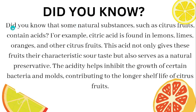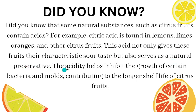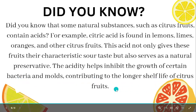Did you know that some natural substances such as citrus fruits contain acids? For example, citric acid is found in lemons, limes, oranges and other citrus fruits. This acid not only gives these fruits their characteristic sour taste but also serves as a natural preservative. The acidity helps inhibit the growth of certain bacteria and molds, contributing to the longer shelf life of citrus fruits.